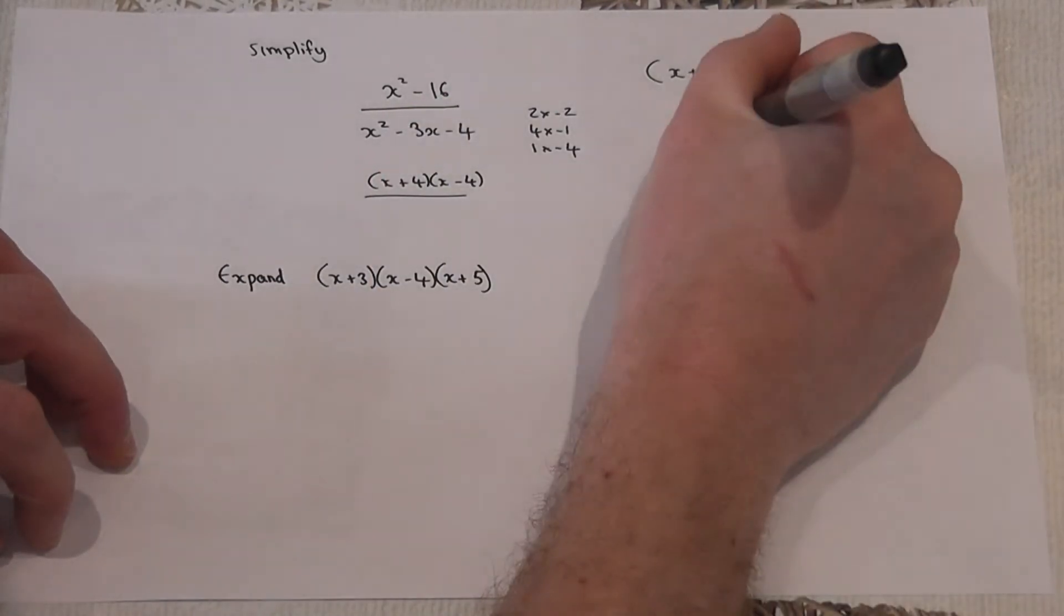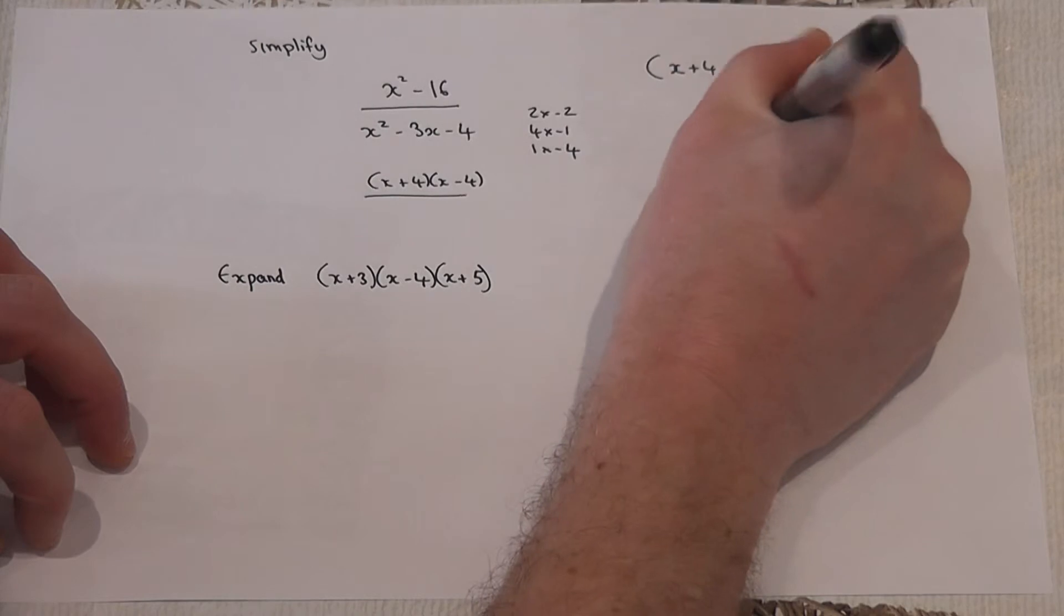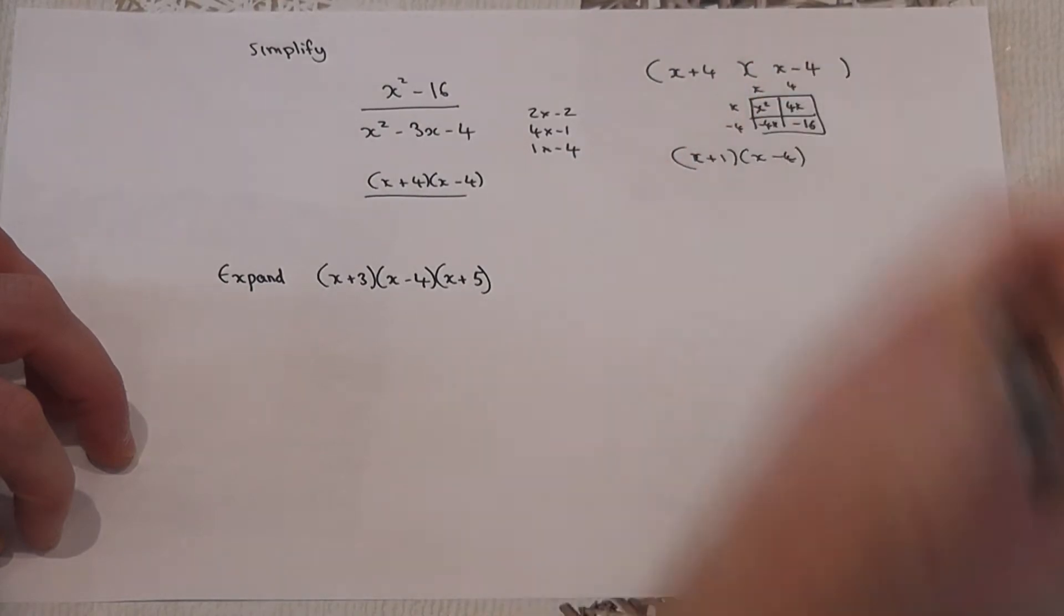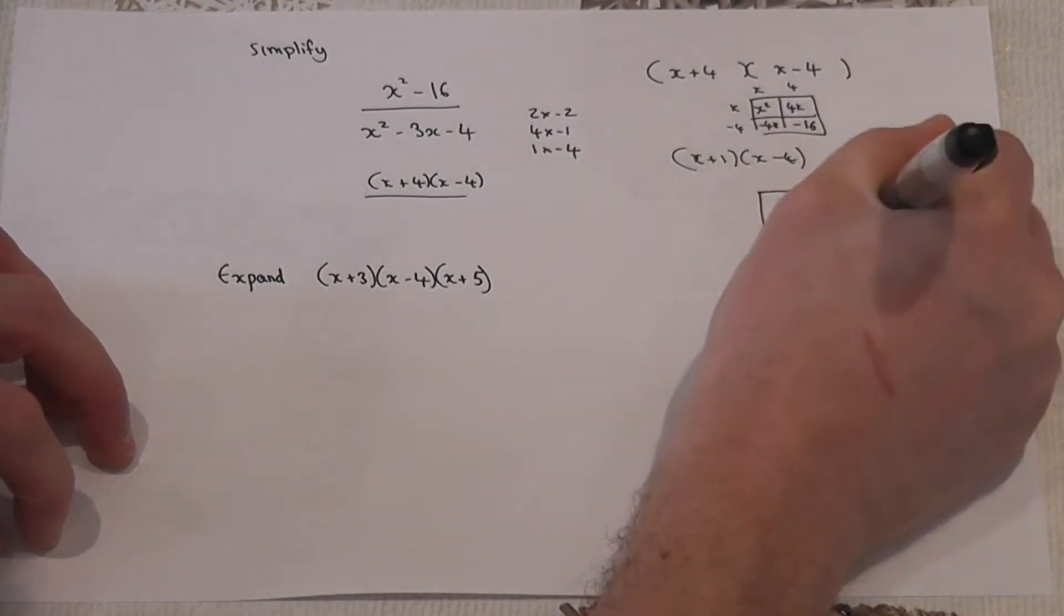So if I show you this, if I write down x plus 1, then x minus 4. If I try to expand this, look what happens.